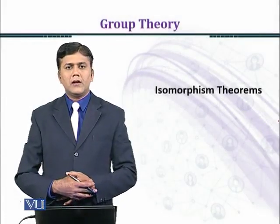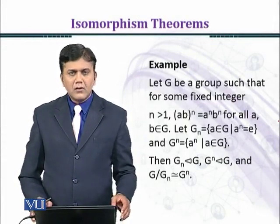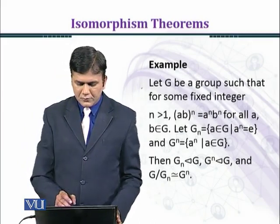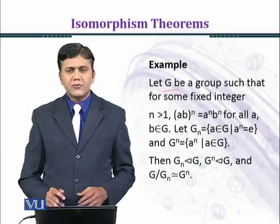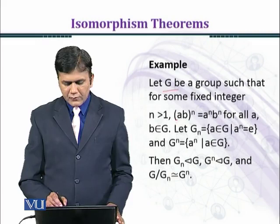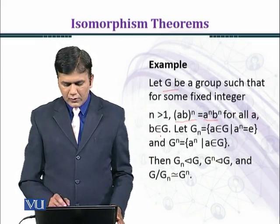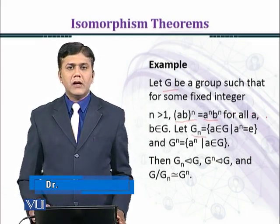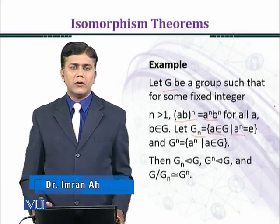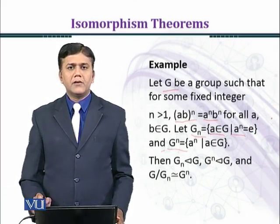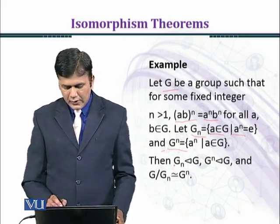In this module we shall complete the example of the previous module. Let's restate the example: let G be a group such that for some fixed integer n greater than 1, (ab)^n equals a^n · b^n for all a, b belonging to G. Let G_n equal to {a belongs to G such that a^n = e} and G^n equal to {a^n such that a belongs to G}.